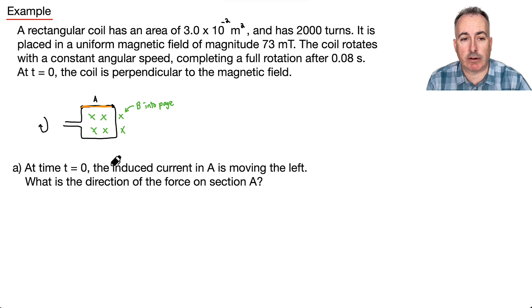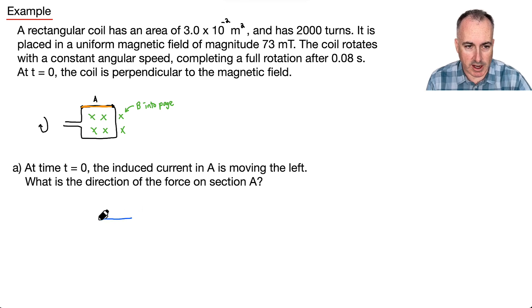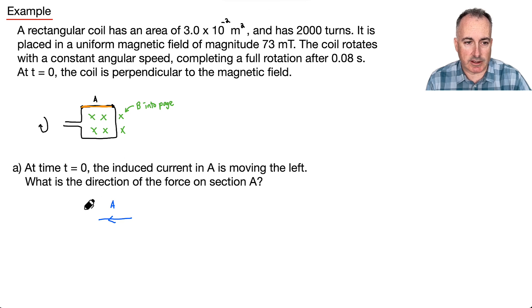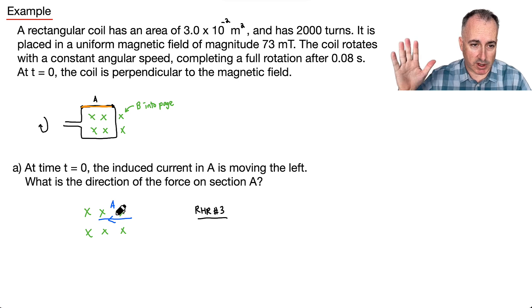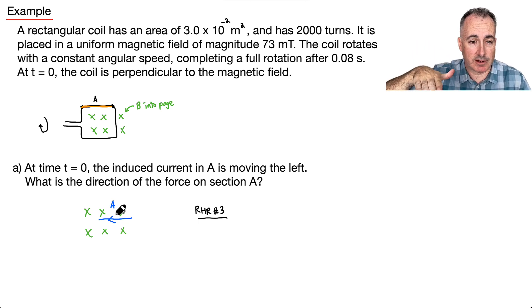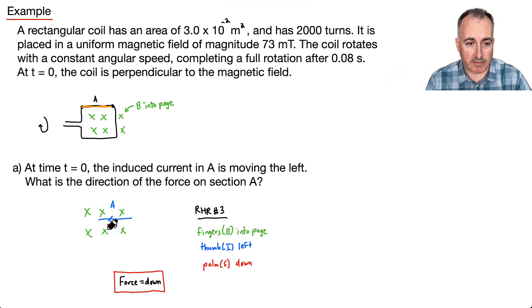The question is: at time t equals 0, we're told the induced current in section A is moving to the left. So I'm going to simplify this and just look at this section A. The induced current is to the left, and this whole thing is still sitting in a magnetic field. I'm going to use right hand rule number 3, because that's going to tell me the force — it's a right hand rule because it's a current.